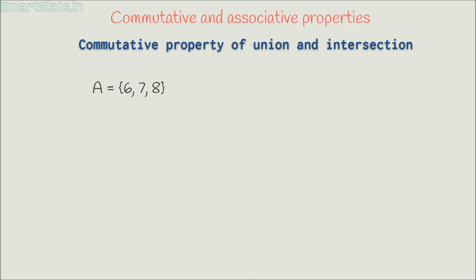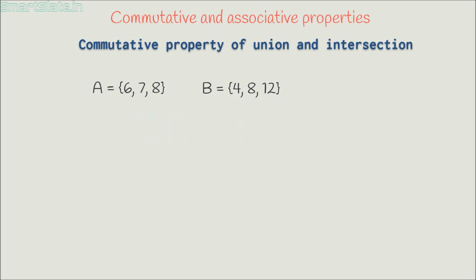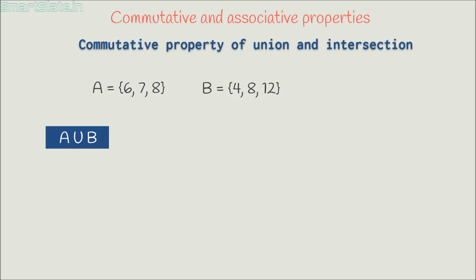We will try to prove this using an example. Consider two sets A and B. Set A has elements 6, 7 and 8. Set B has elements 4, 8 and 12. We are trying to prove that union and intersection of these two sets is commutative. Let's find out the union of A and B. Union of A and B is the set of all elements from set A and set B. Elements from set A are 6, 7 and 8. Taking elements from set B — 4, 8 and 12 — since 8 is already present, we don't put it again. So union of these two sets consists of elements 6, 7, 8, 4 and 12.